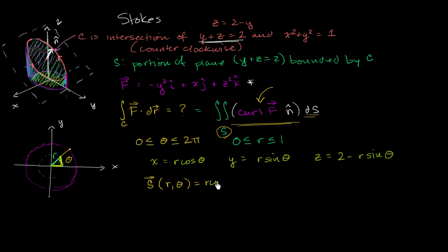We can write it as r cosine theta i plus r sine theta j, plus 2 minus r sine theta k.